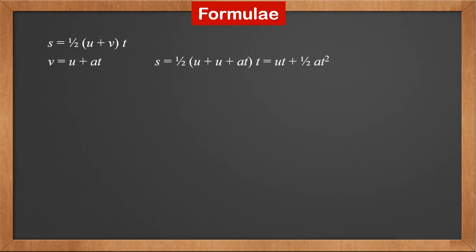We also know v is u plus a times t. Substituting v into the previous equation, we get s equals half (u plus u plus at). So s equals ut plus half a times t squared.